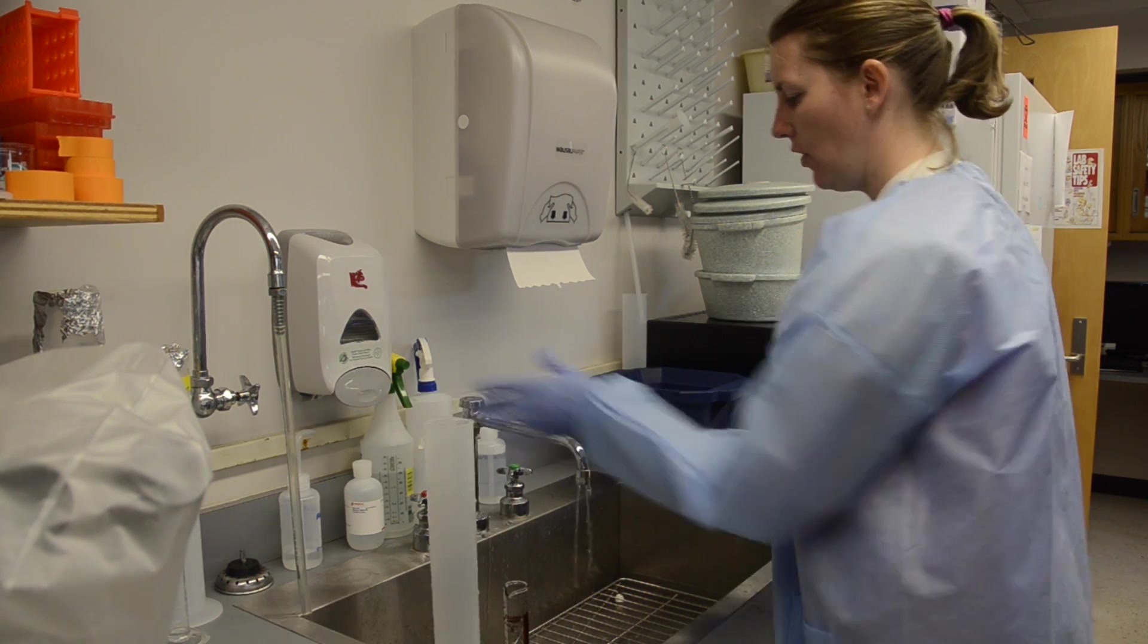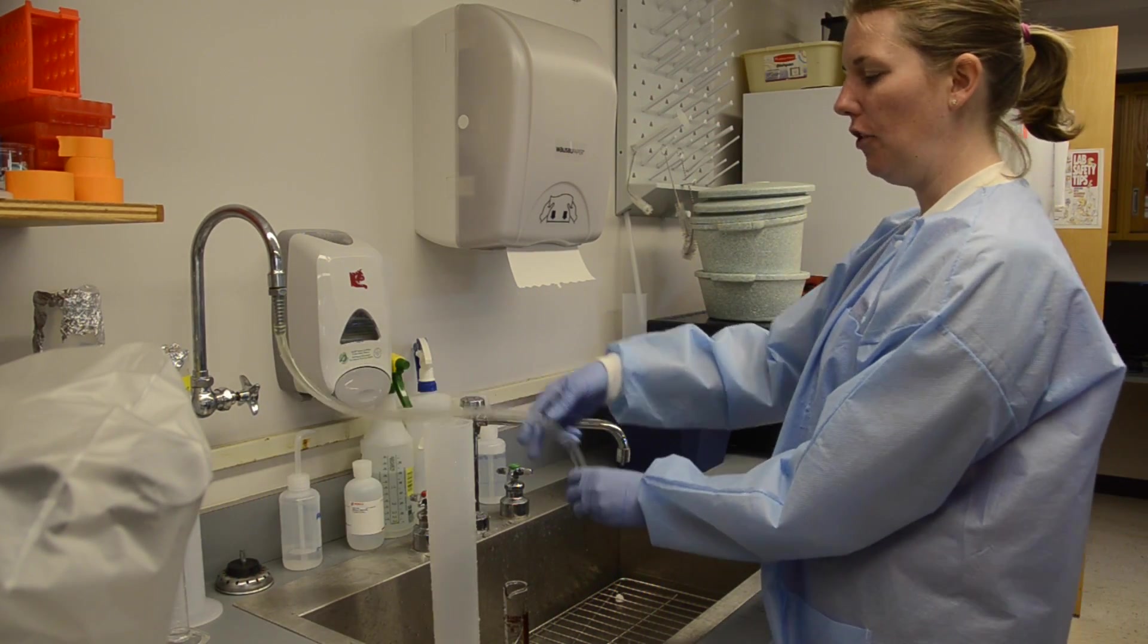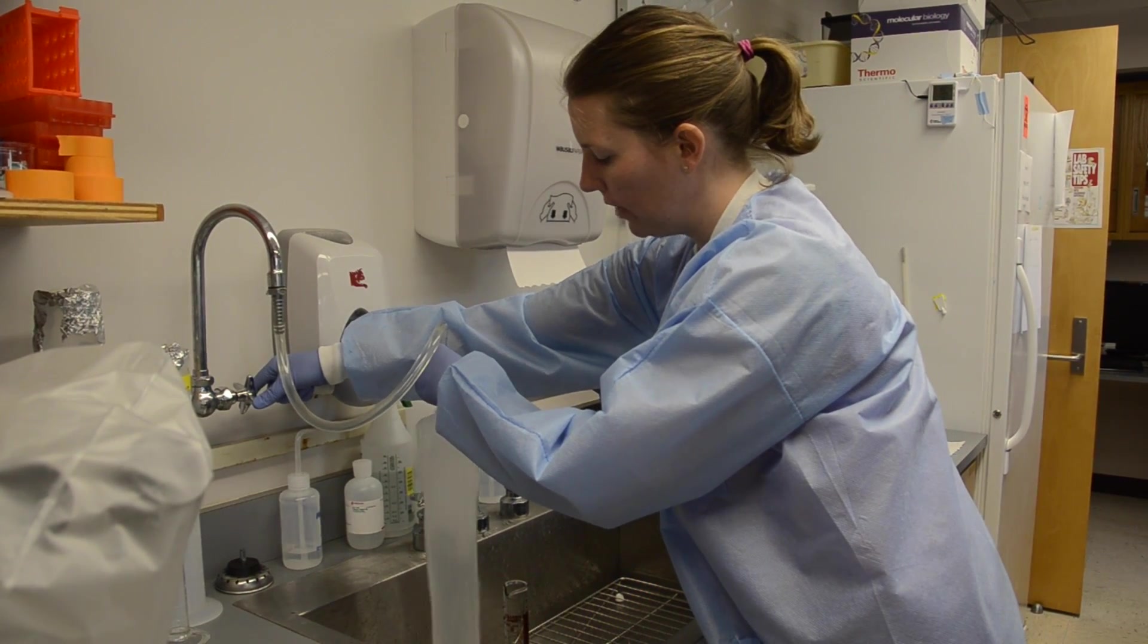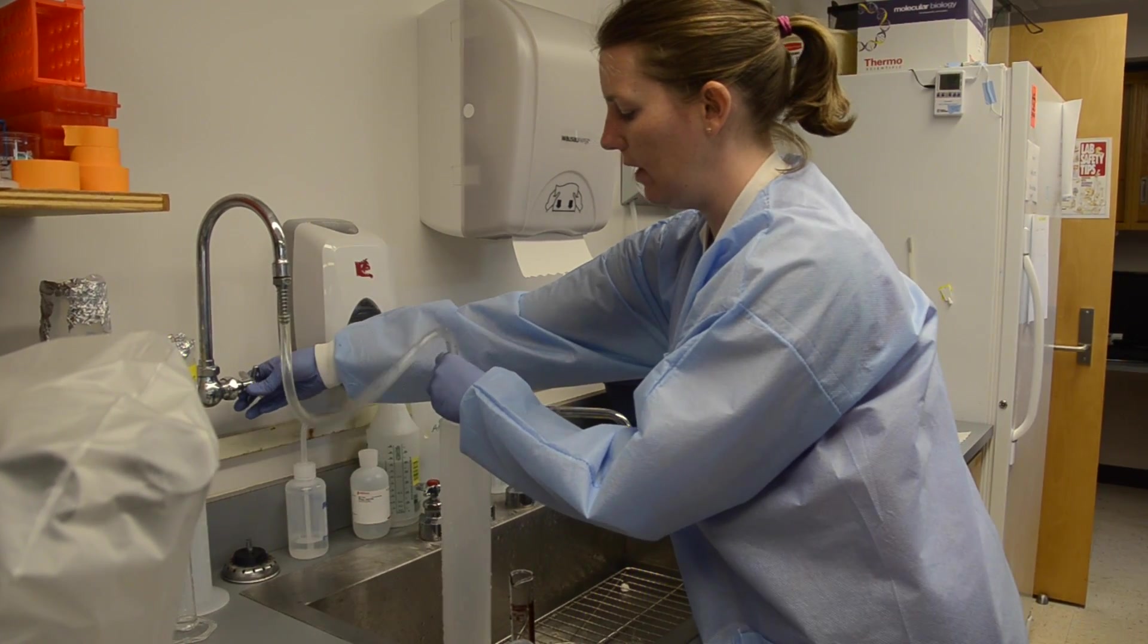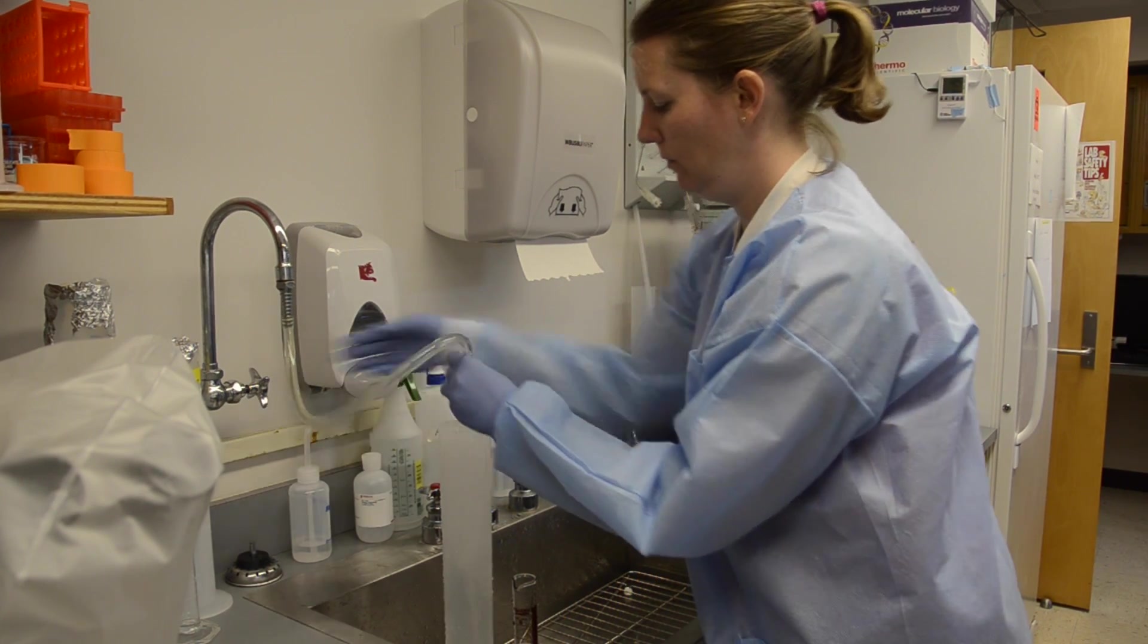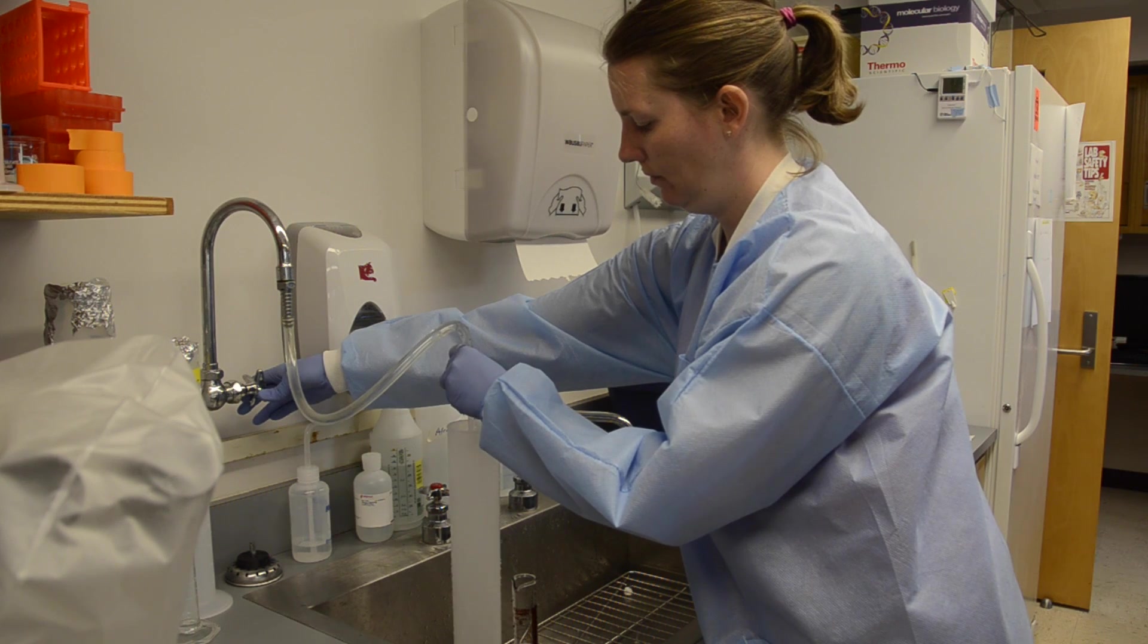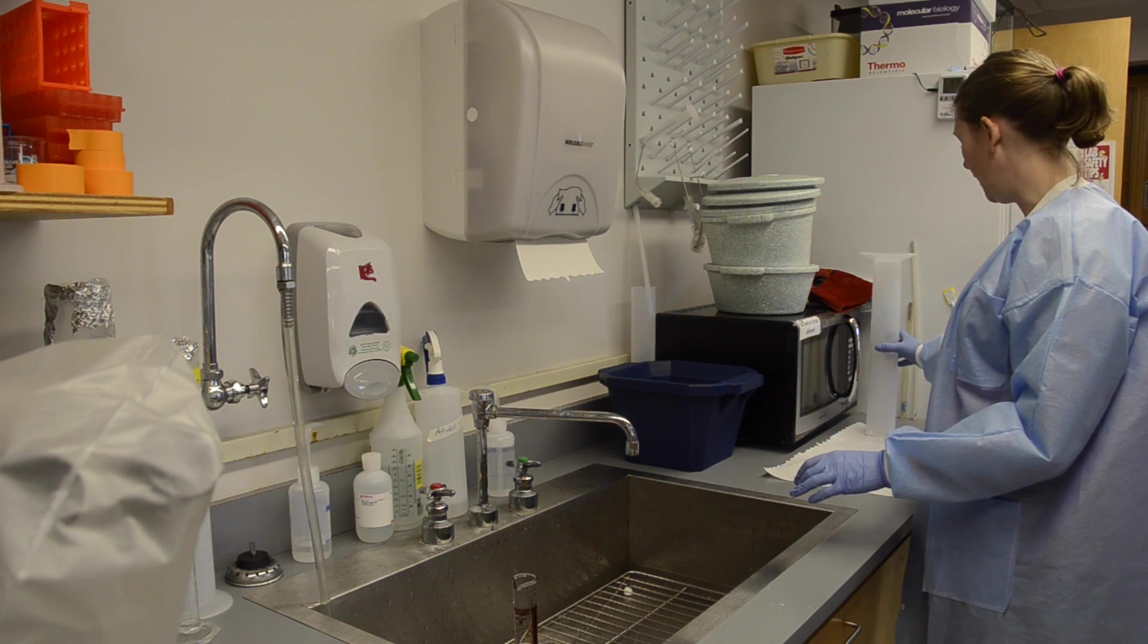Now that these have had detergent and regular water, we're going to use the reverse osmosis water to do three washes. For the graduated cylinders, I simply fill them up, let them spill over, pour them out, and do that three times each. Then put it over here to dry.